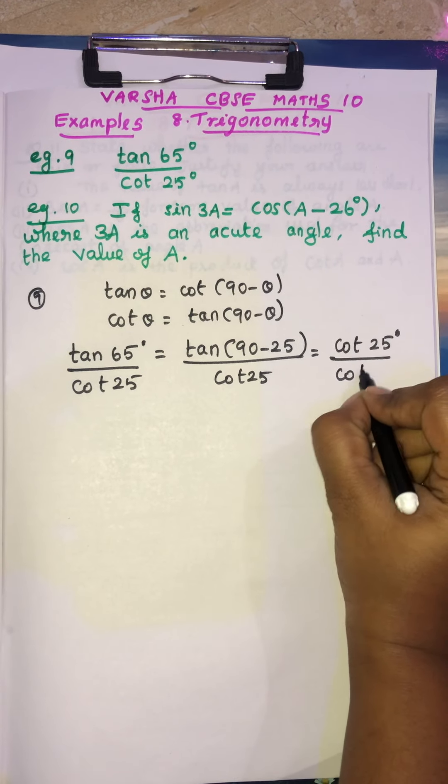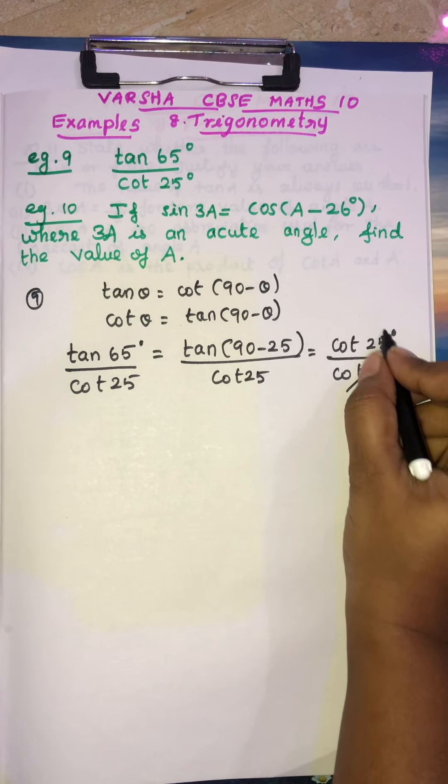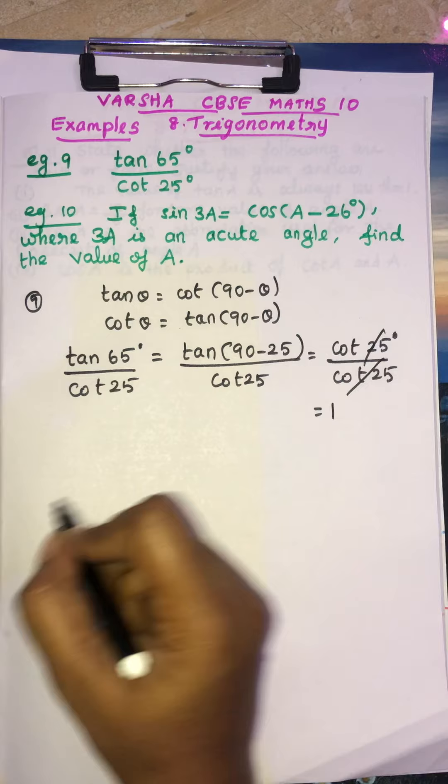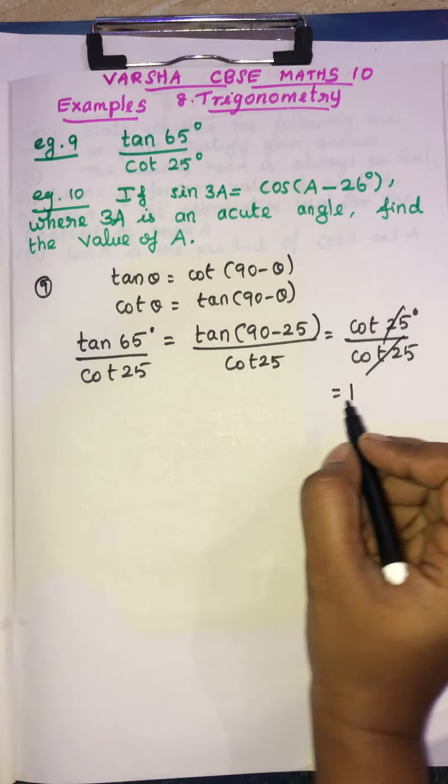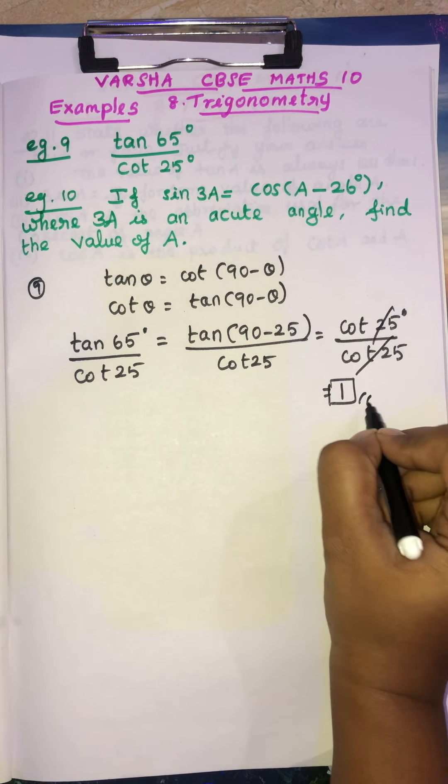So cot 25 by cot 25. So if you cancel you will get 1. So this is your answer for the first question.